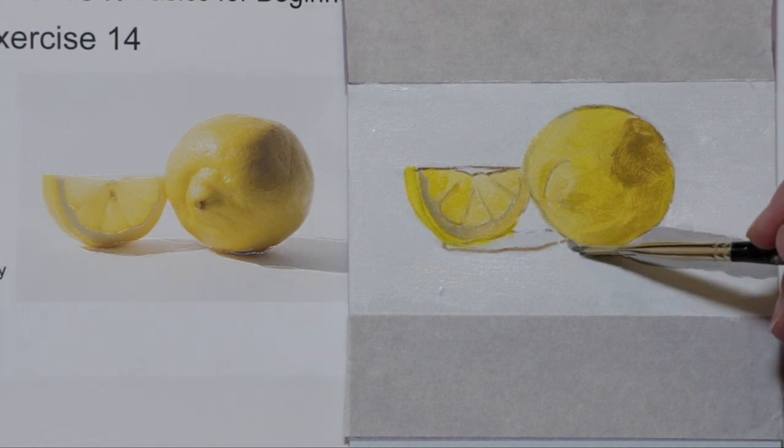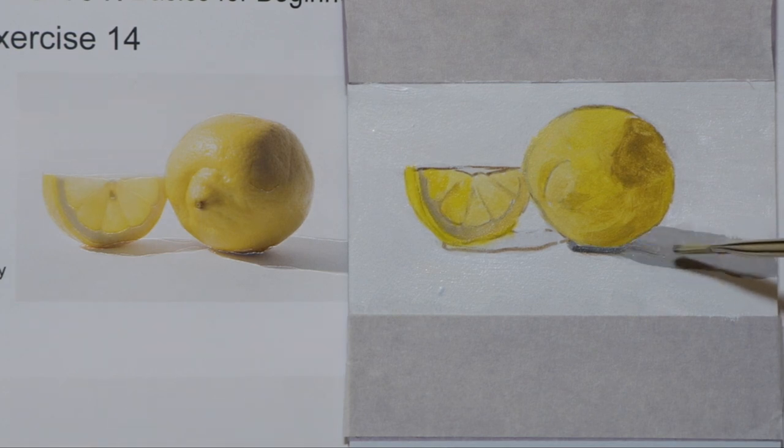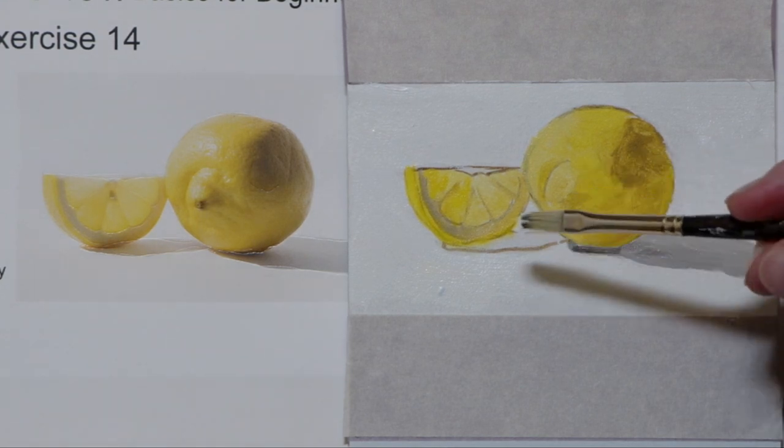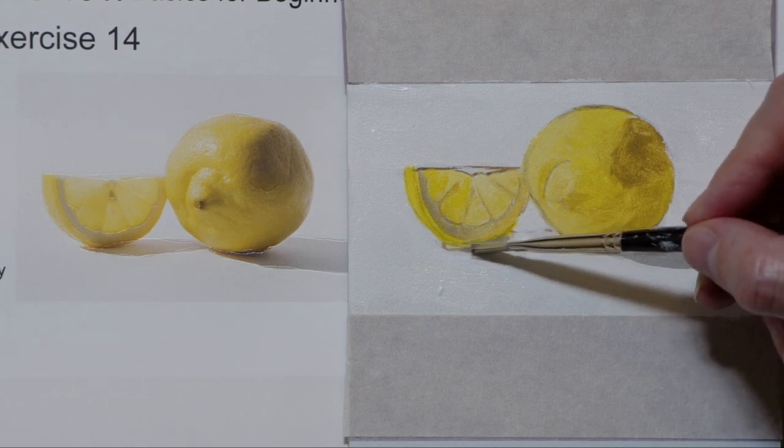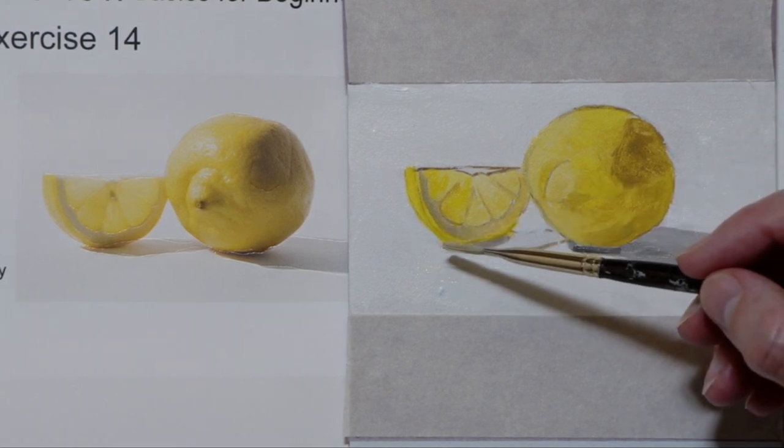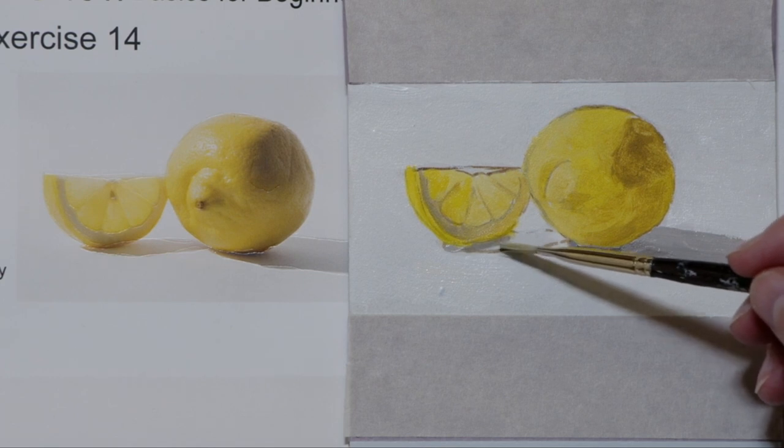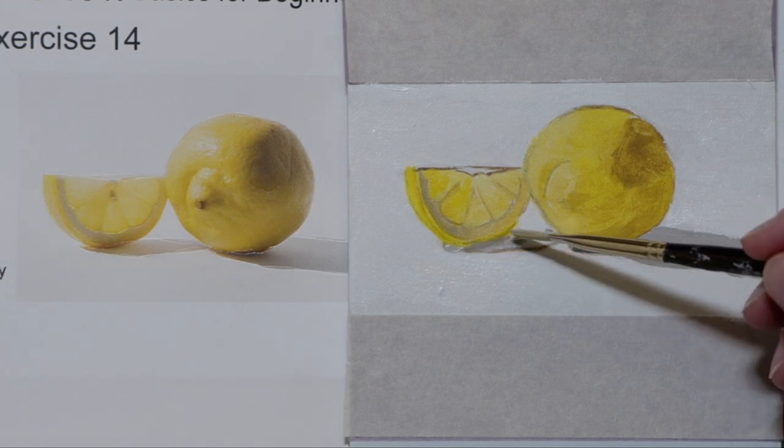So the darkest area is right there underneath the lemon. But you can see as it moves away from the lemon that the reflected light is bouncing back and we're not as dark. So the cast shadow is even changing values which is really important to remember.